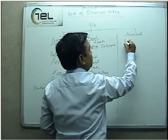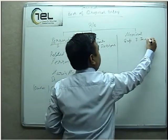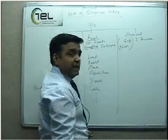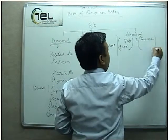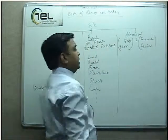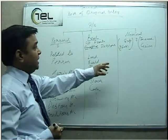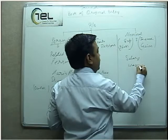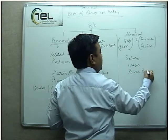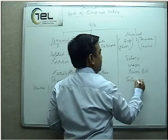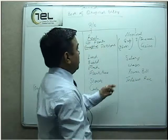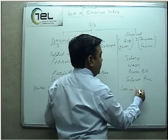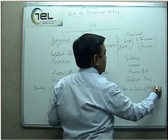Under Nominal Account we take all the Expenses and all the Incomes. Though Expenses and Losses are different, for Accounting treatment we treat them the same. Similarly, Income and Gains are treated in the same manner. So Salary, Wages, Power Bill, and Interest Received are all Nominal Accounts. All Expenses, all Income, and also a Loss on Sale of an Asset will come under the Nominal Account category.